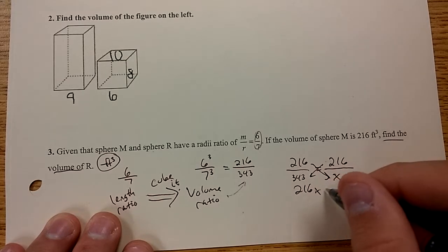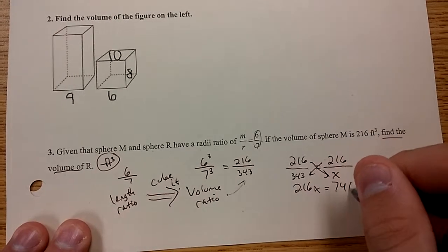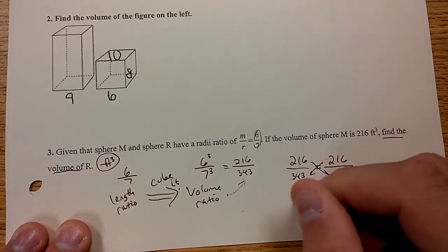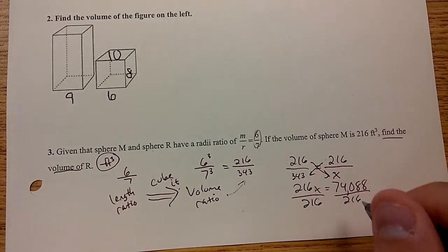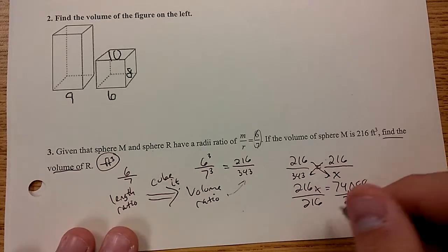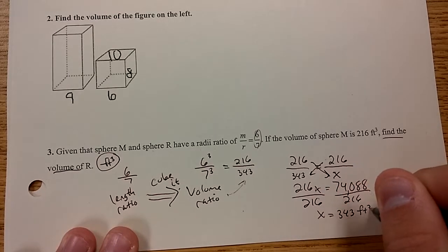You get 216X equals 216 times 343, which is 74,088. Divide both sides by 216.